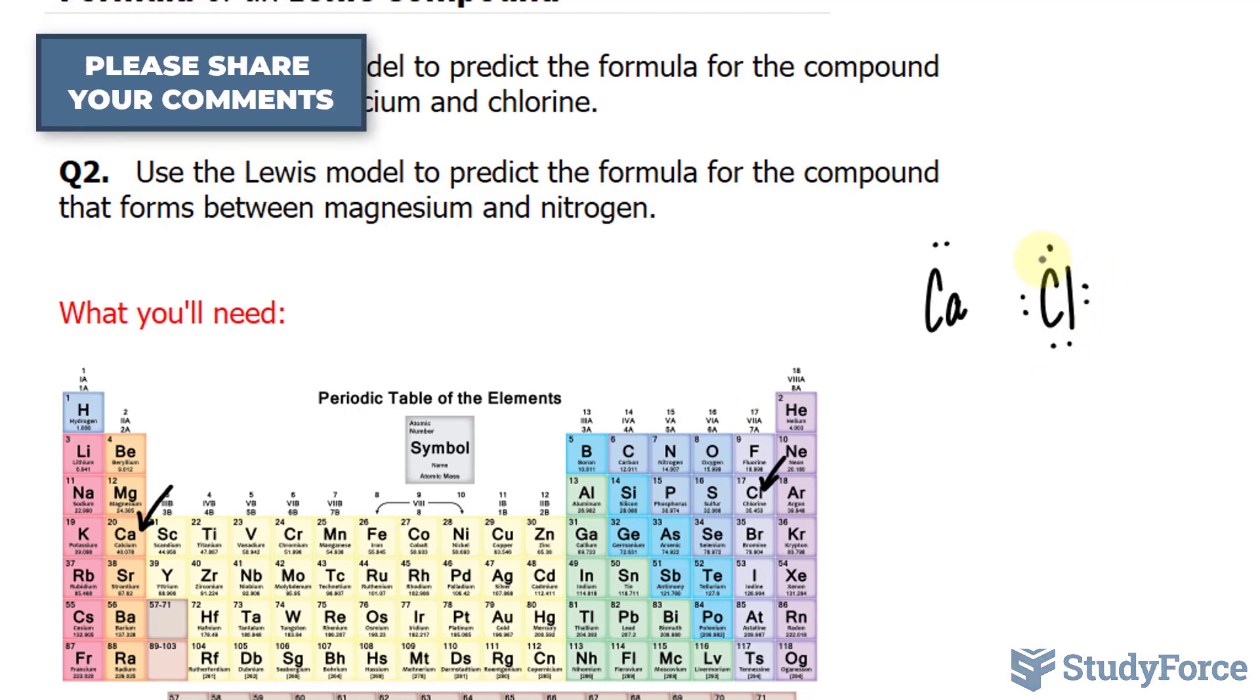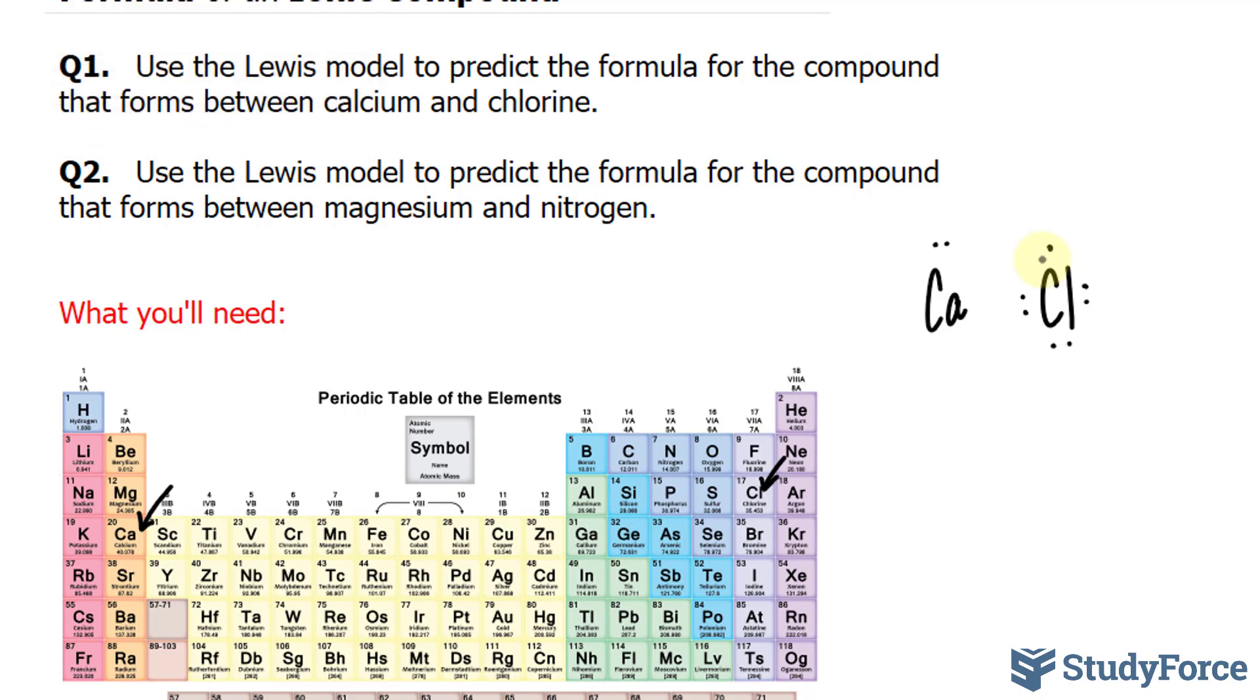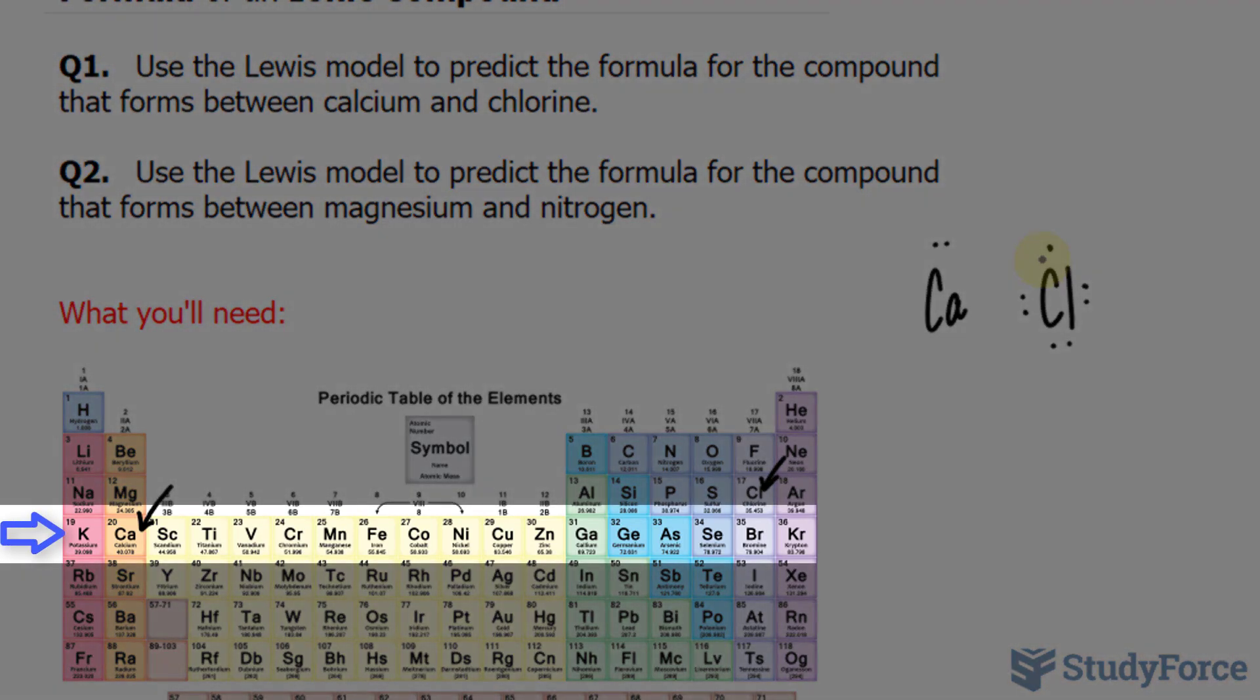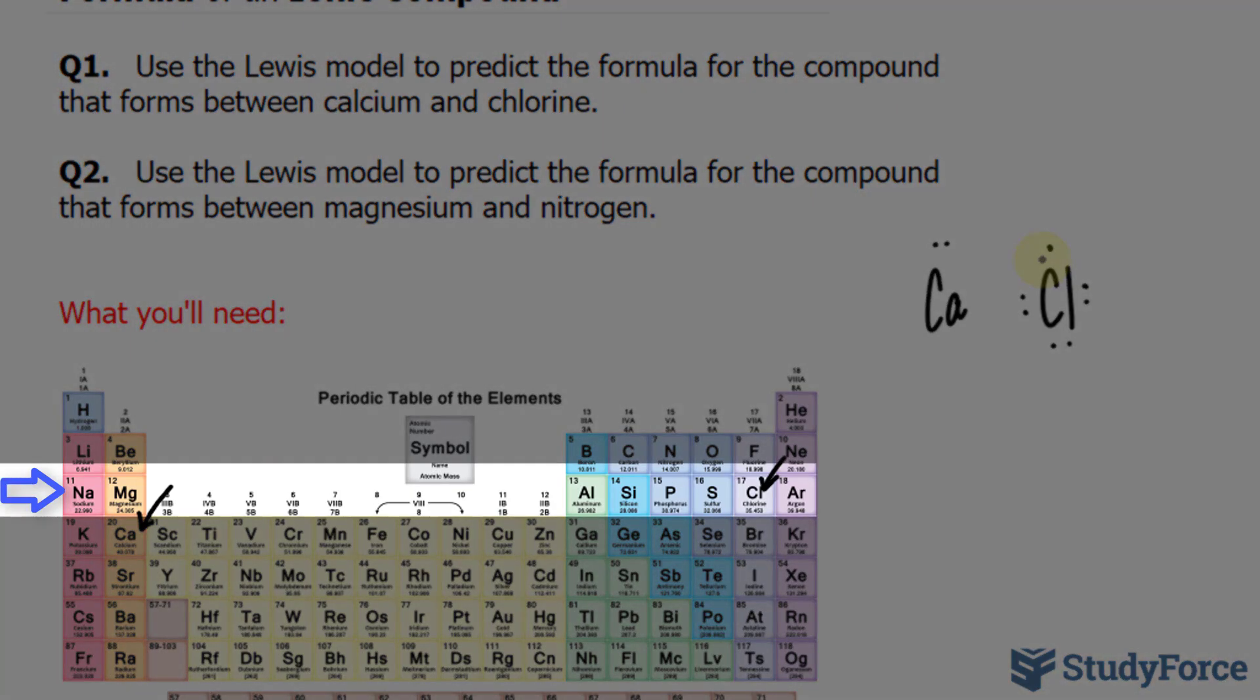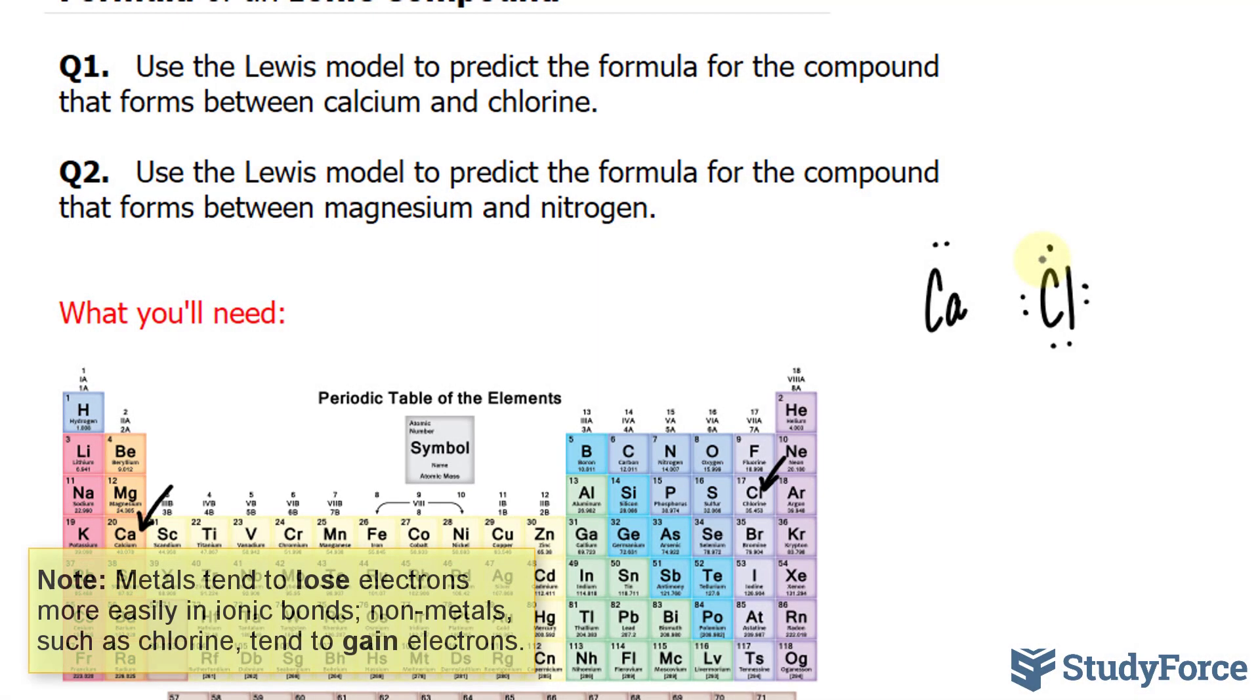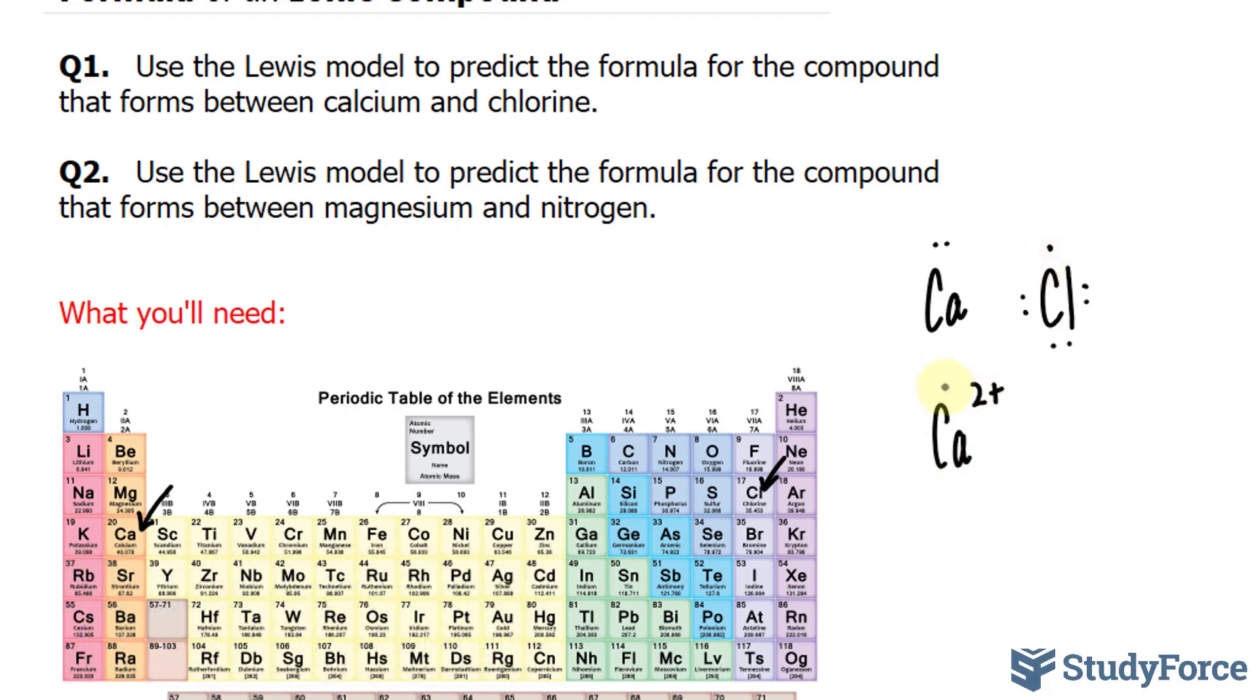Now given that calcium is a metal, it must lose its two valence electrons to form a complete octet, therefore going from a principal level of four to three, while chlorine only needs to gain one electron to obtain an octet. So what we'll do is take away the two electrons from calcium, and we'll write down calcium two plus, like this. Notice that we don't have any more electrons around calcium.